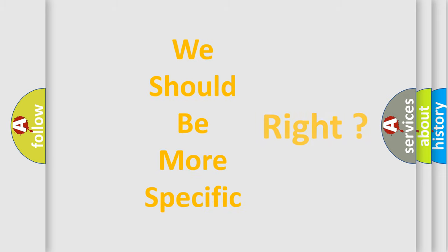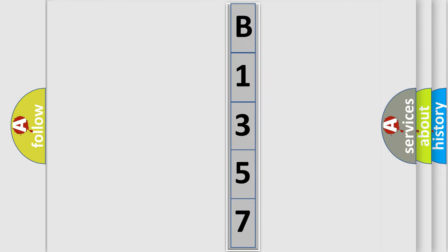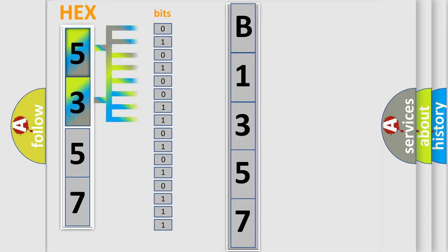The following demonstration will help you look into the world of software for car control units. The error code is split into two bytes consisting of 16 bits. One bit is the basic unit that each computer works with. The bit has two logical states: zero, which is the low level, and one, which is the high level.